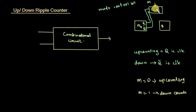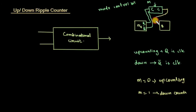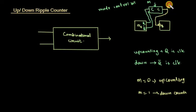When M equals 0, we use Q as the output — Q is called for up counting. When M equals 1, Q-bar is called for down counting. Q-bar feeds the second flip-flop.